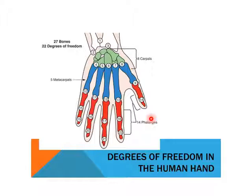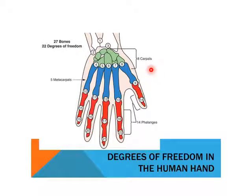You may have also studied this in your Theory of Machines course. Degrees of freedom means the number of independent joints. This is showing the degrees of freedom involved in a human hand — approximately 22 degrees of freedom. When you have a high number of degrees of freedom, it helps you to hold any type or shape of object.